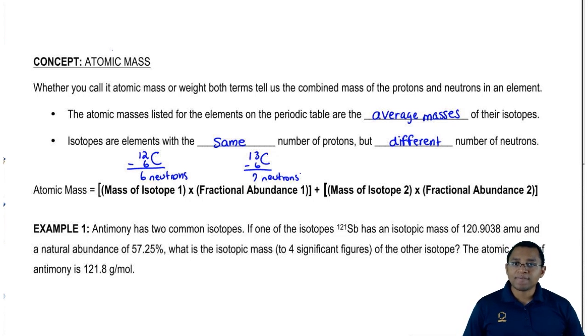So they're both carbon because they both have six protons. They have the same atomic number but when we subtract their atomic masses by their atomic number, we get different number of neutrons. So this is what isotopes are.